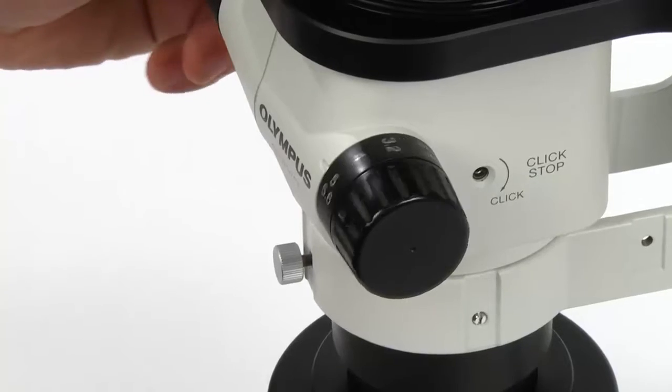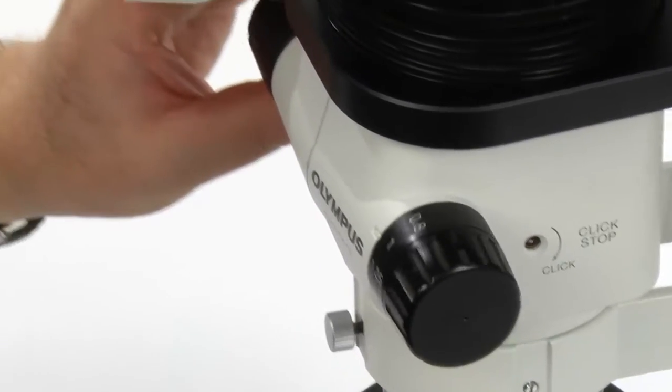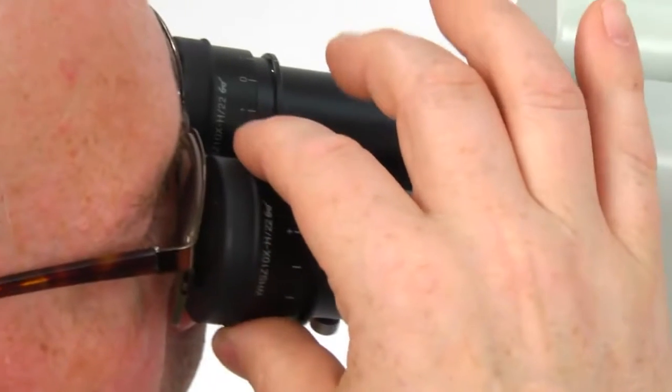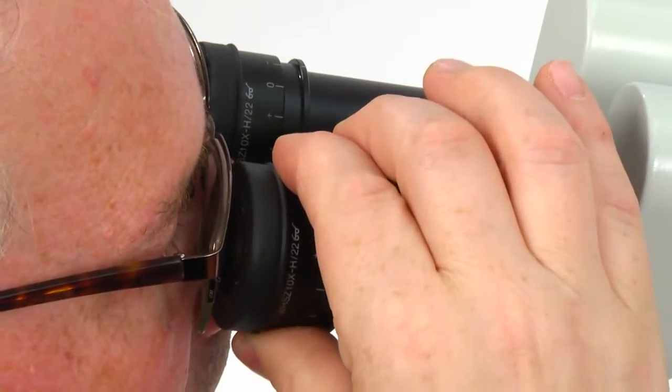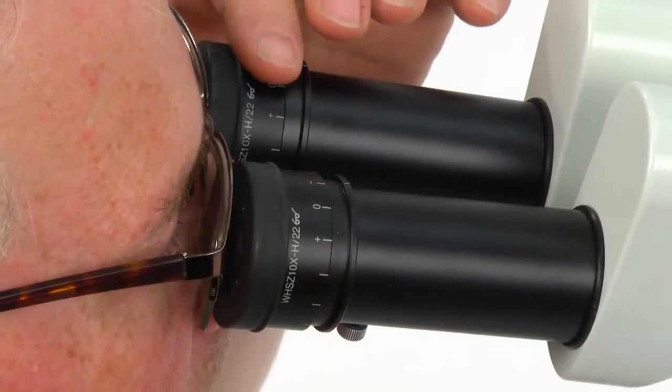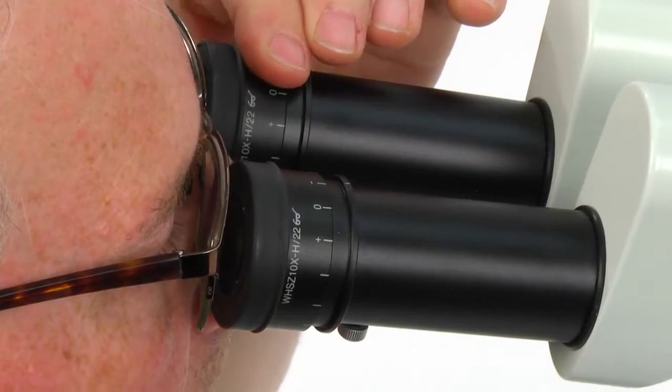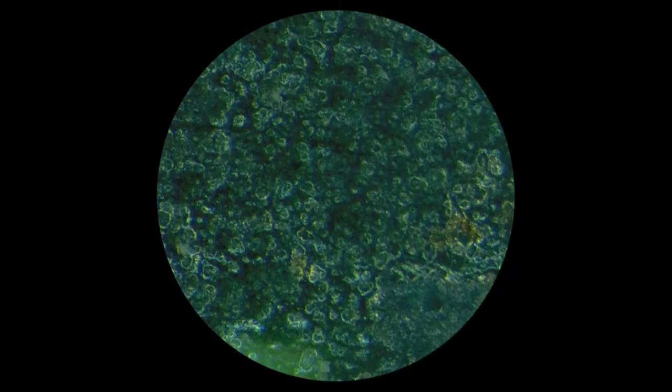Finally, set the zoom adjustment knob for the lowest magnification and rotate the diopter adjustment ring of the left and right eyepieces to bring the sample into focus. The adjustment is now complete and the image should remain in focus from low to high zoom magnification.